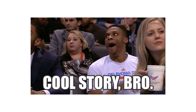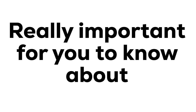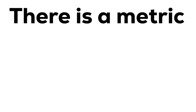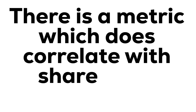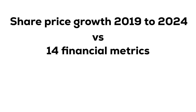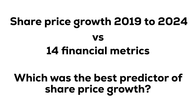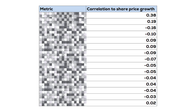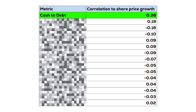And whilst that's interesting, it's what I did next that's really important, because it turns out there is a metric which does correlate with share price growth. I calculated the correlation between the company's growth since 2019 and 14 other financial metrics to see if any of them could identify stocks with the most growth potential. The metric with the strongest correlation to share price growth was cash to debt, with a coefficient of 0.38.